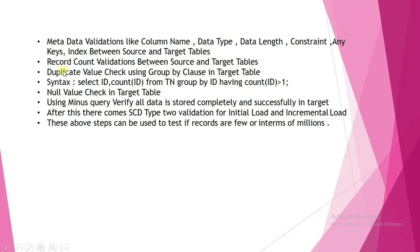Also record count validations between source and target tables. Duplicate value check using GROUP BY clause in the target table — the syntax is: SELECT id, COUNT(id) FROM table_name GROUP BY id HAVING COUNT(id) > 1 — this gives you duplicate rows. Videos on how to delete duplicate rows are available in my YouTube channel. Finally, null value check in the target table, and using a MINUS query to verify all data is stored completely and successfully in the target.